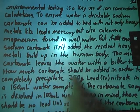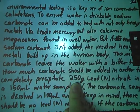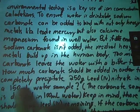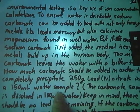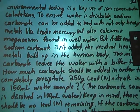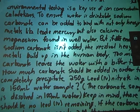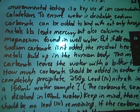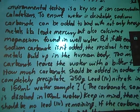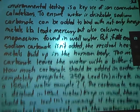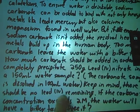How much carbonate should be added in order to completely precipitate 250 grams of lead nitrate in a 150 milliliter water sample? Now we're getting somewhere. The carbonate sample is dissolved in 100 milliliters of water. That sounds like a stoic problem to me.